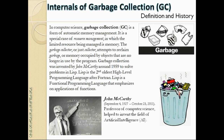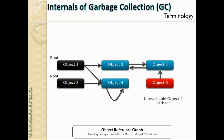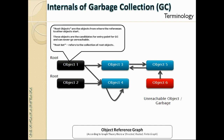Moving on to the terminology behind garbage collection — we see three colored objects in the object reference graph. The first color is black, which represents root objects. Root objects are the objects from where references to other objects start. These objects are candidates for entry points for garbage collection and can never go unreachable.